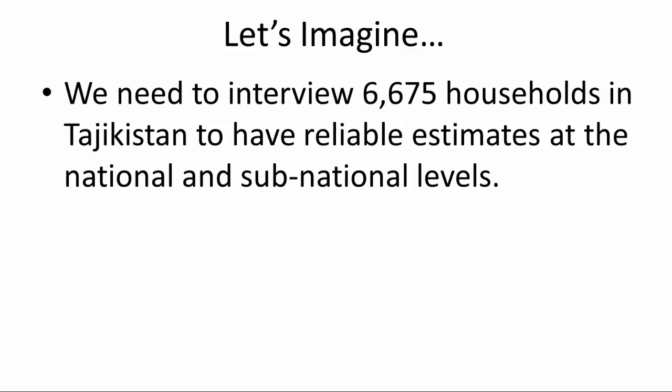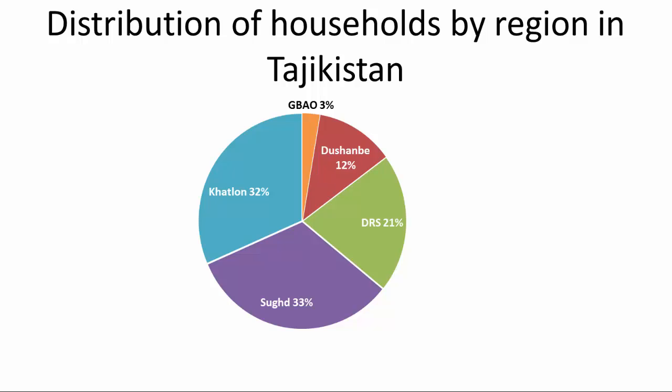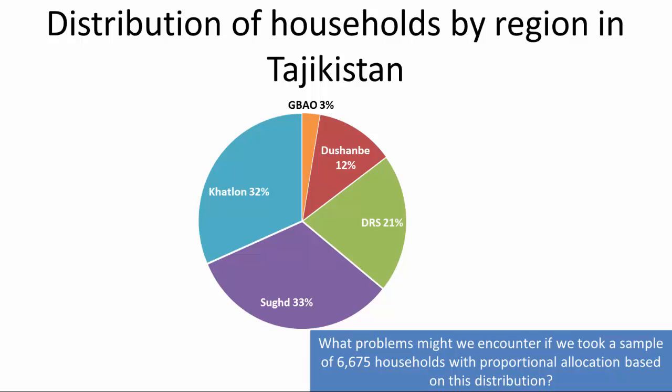As discussed in Part 1, the statistical agency under the President of Tajikistan, in conjunction with sampling experts at DHS, calculated that for the 2012 Tajikistan DHS, we needed to interview 6,675 households to get reliable estimates at the national level, for urban and rural areas, and for each of the five regions. For demonstration purposes, let's imagine we want to take a sample with proportional allocation, meaning we select households from each region exactly in proportion to their distribution in the country. This pie chart shows the distribution of households by region in Tajikistan, and like most countries, the population is not evenly distributed among the five regions.